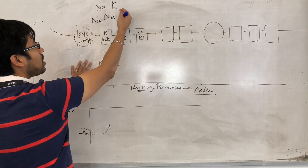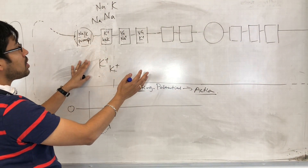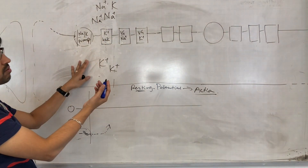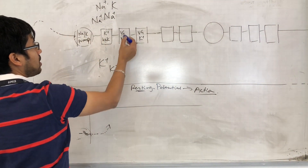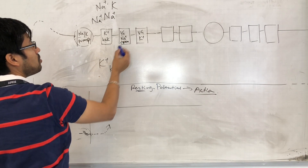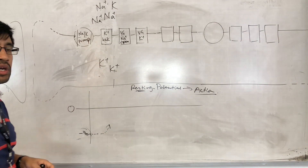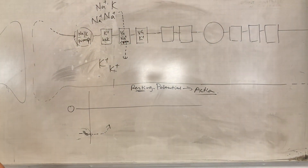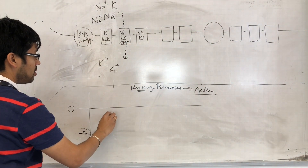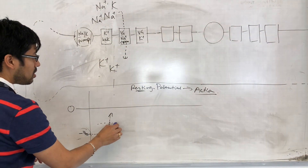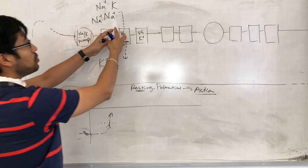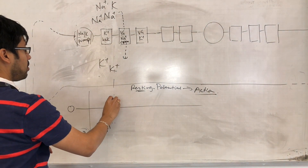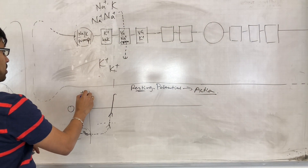Remember, out here we've got loads of sodium, in here hardly any, and also it's a bit more negative in here than out here, which is going to attract these positive ions. So when these voltage-gated sodium channels open — depolarization causes them to open — even more sodium enters the cell. A little bit of depolarization causes even more depolarization, and once you hit a certain threshold level of depolarization, you open enough of these sodium channels to get an action potential, which is around plus 40 millivolts.